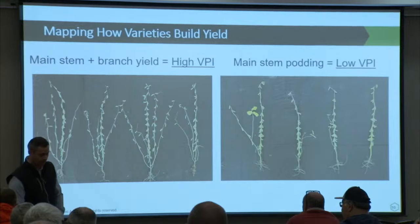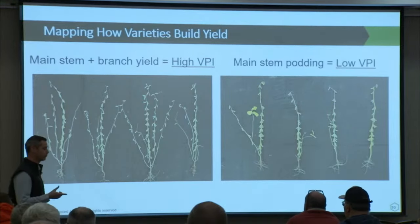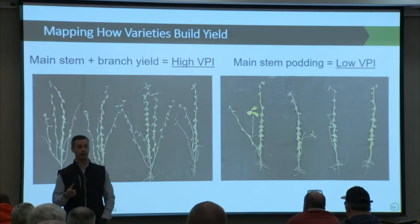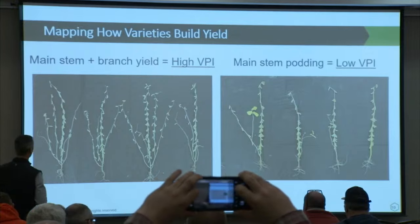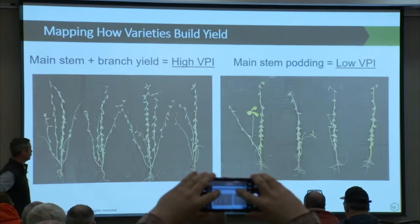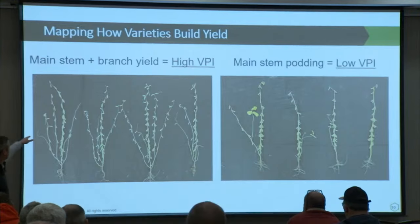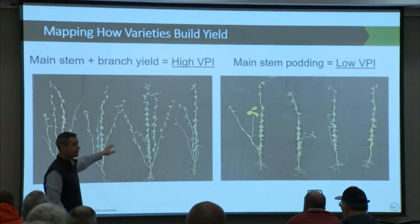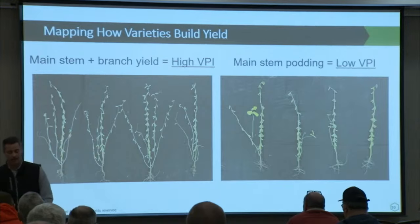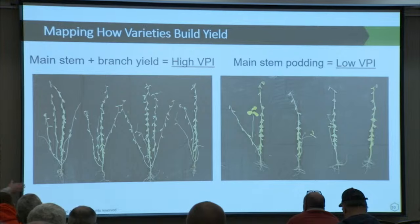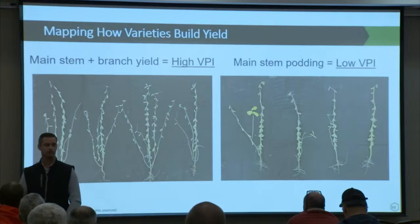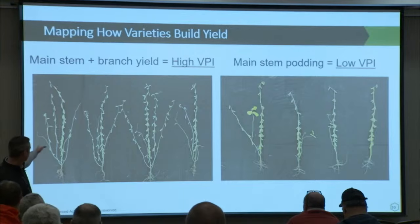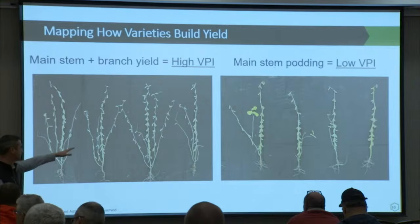For multiple years, we were able to correlate back where plants were building yield, and it directly correlated to subfield performance. We classified these into two groups: high VPI products and low VPI products — VPI standing for Variety Profile Index, which we patented. We found a wide range within the industry of how much varieties would compensate with branching to make up yield. High VPI on the left builds yield primarily from branches; low VPI on the right is primarily main stem.